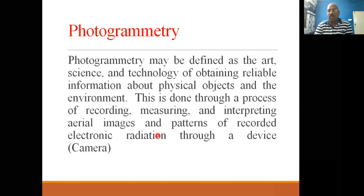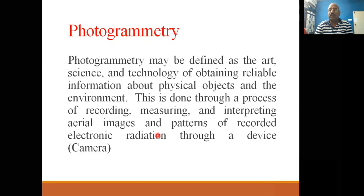This information is about physical objects like buildings, road networks, water bodies, vegetation, and utility features — all features on the earth and in the environment. This is done through a process of recording data by images, and measuring the physical dimensions of objects. For example, measuring a building's width, length, and height, or the length and width of a road.